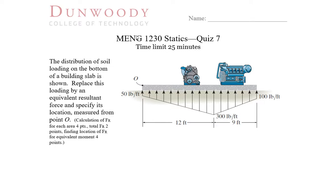Welcome to the solution for Mechanical Engineering 1230 Statics Quiz 7 at Dunwoody College of Technology. We're given a distributed load and we're needing to find the equivalent resultant force and its location.